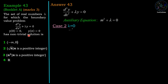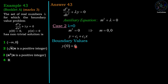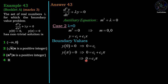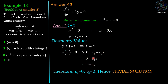Case 2: λ = 0, so the auxiliary equation becomes m² = 0, giving m = 0 as a repeated root. The corresponding solution is y = c₁ + c₂x. Applying y(0) = 0 gives c₁ = 0. Applying y(π) = 0 gives c₂π = 0, so c₂ = 0. Therefore c₁ = c₂ = 0 and y = 0, which is trivial. For λ = 0 we cannot get any non-trivial solution.